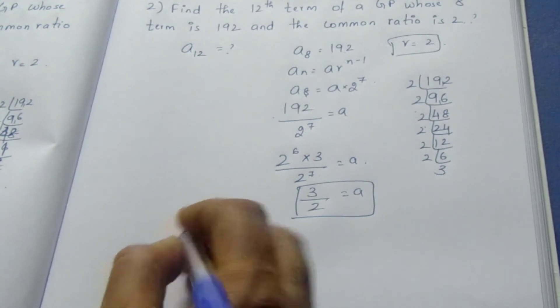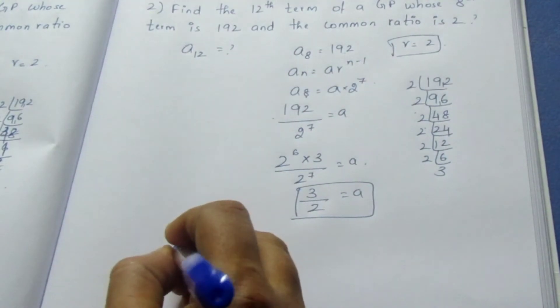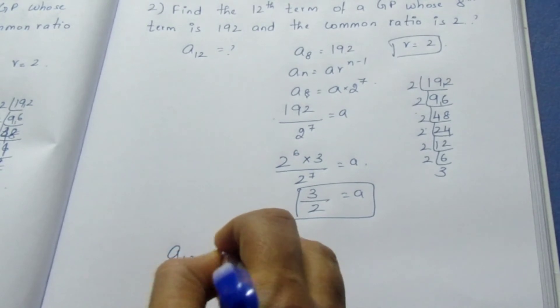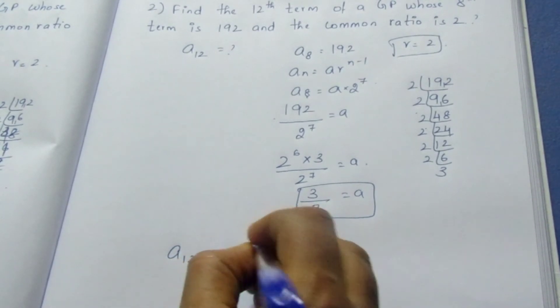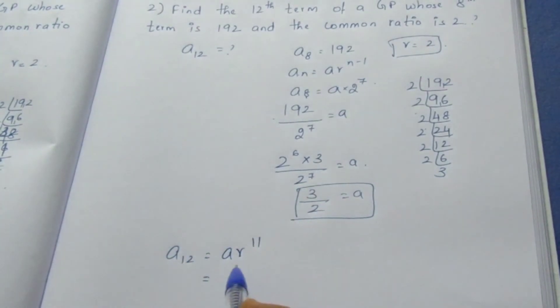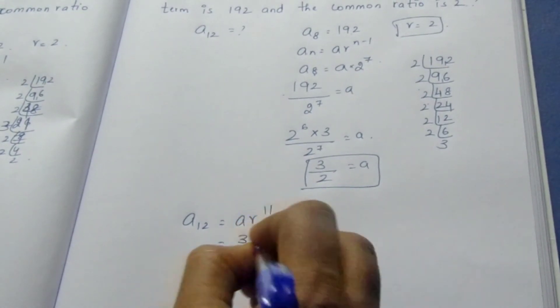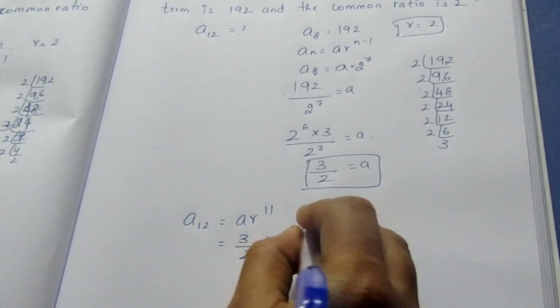For A12, I have already written the formula for An. It will be A × R^11, because 12 minus 1 is 11. The A value we know is 3/2, and R is 2, so that's (3/2) × 2^11.